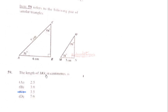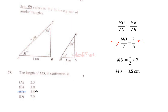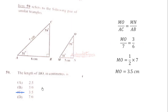Item 59 refers to a pair of similar triangles. We want to calculate the length MO in centimetres. We use the ratio MO over AC equals MN over AB. Substituting: MO over 7 equals 3 over 6, which simplifies to 1 over 2. Multiplying both sides by 7 gives MO equals 3.5 centimetres. The correct answer is option C.